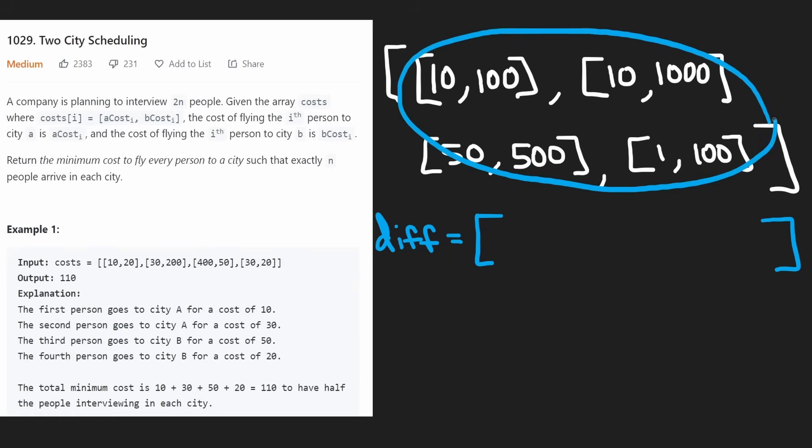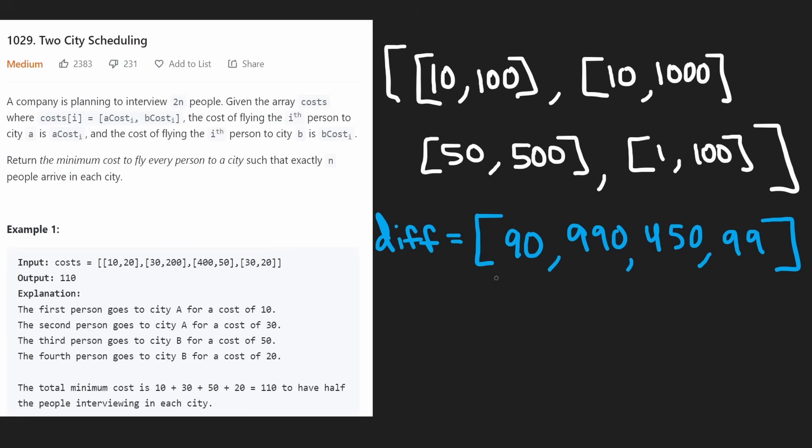For the first one, we'll take the second minus the first: 100 minus 10, so that's 90. That basically means it's going to cost us 90 more to send them to city B than city A. The second one is going to be 990. The third one is going to be 450, 500 minus 50. And then the last one, 99. So in this case, all of them are positive, which tells us that it would be cheaper to send all of them to city A rather than city B. But now we can effectively compare them.